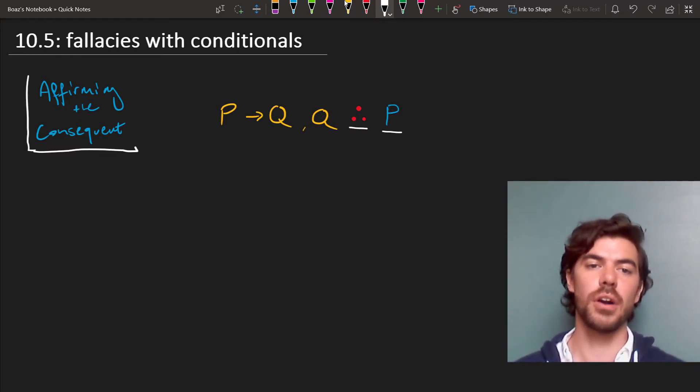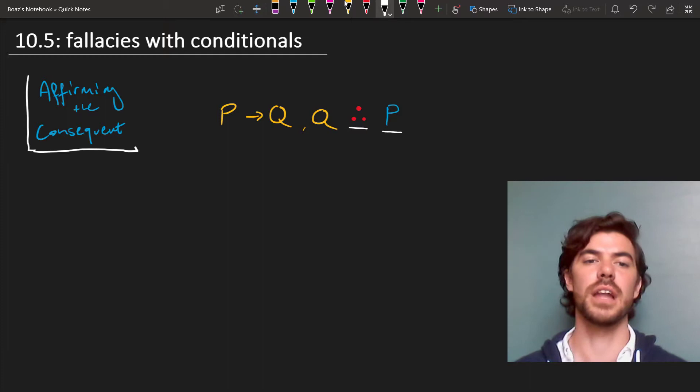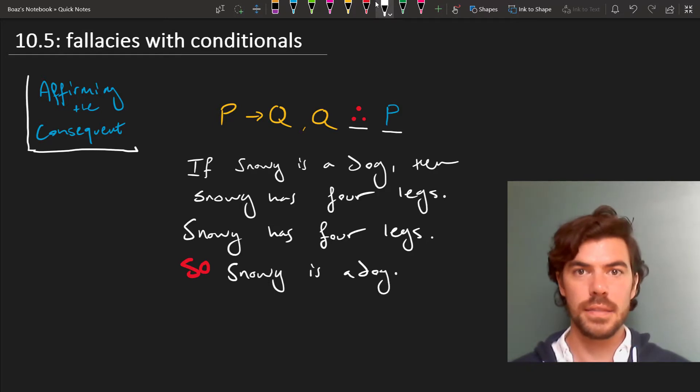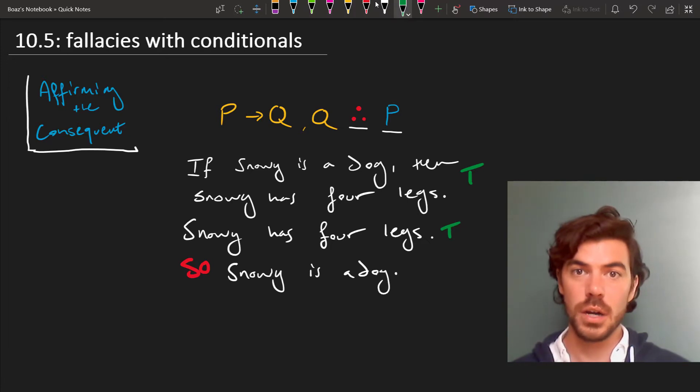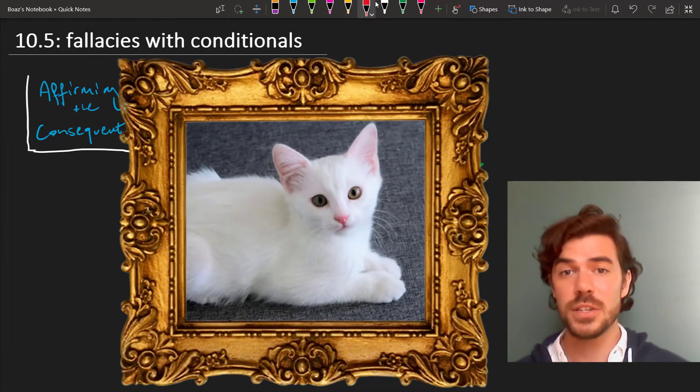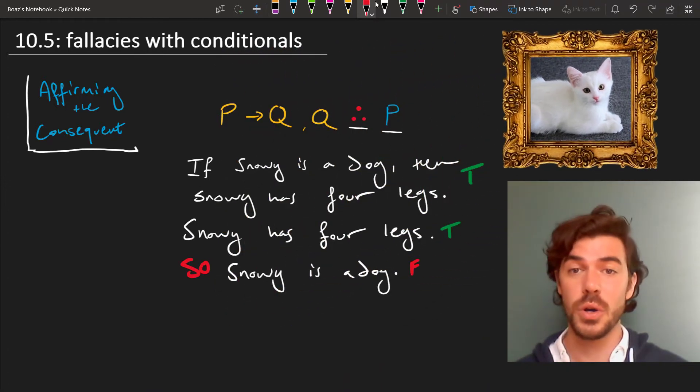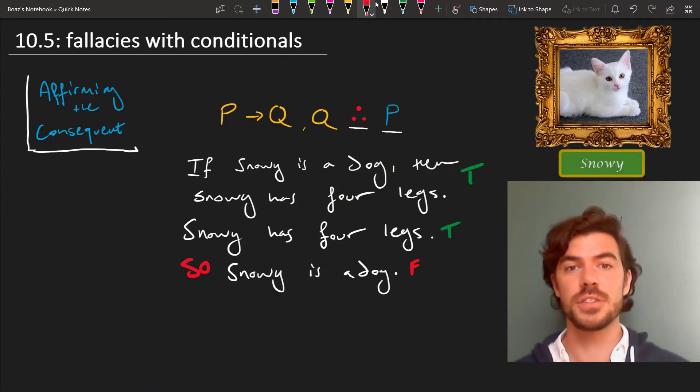Here's an example of an argument constructed along these lines. So suppose we come across the following statements: If Snowy is a dog, then Snowy has four legs. That's true. Snowy has four legs. Let's say that's also true. So Snowy is a dog. Well that could be false. For instance, imagine Snowy's a cat. There are many other ways of being a four-legged animal without being a dog. So that's how affirming the consequent works.